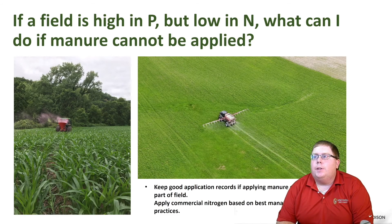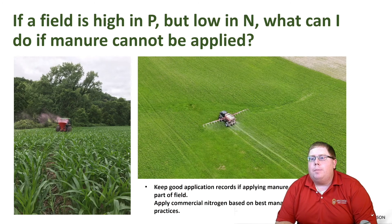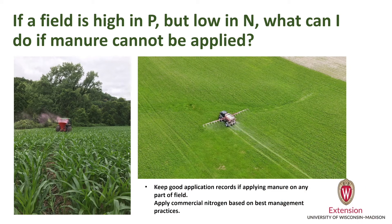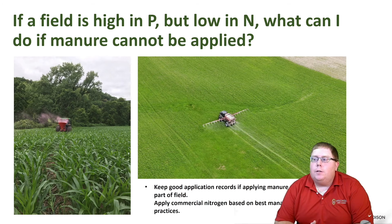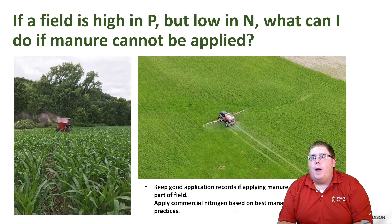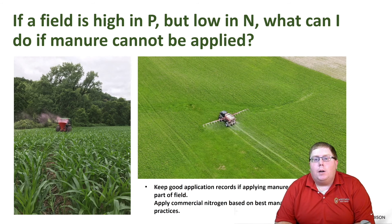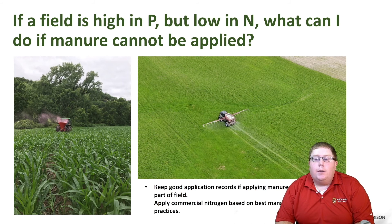So if the field is already high in phosphorus but low in nitrogen, what are some options? Typically we're not going to be applying manure to these fields because they're already under restrictions from excessively high phosphorus numbers. We can get creative — maybe there are areas of the field low in phosphorus where we can still apply, then use commercial fertilizer on the rest. Or we can use a spring-applied or split application of nitrogen depending on soil type. We want to keep good application records and apply commercial nitrogen following best management practices.